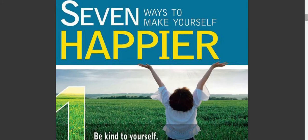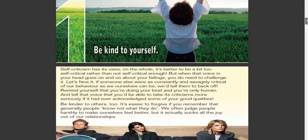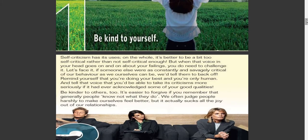Now let's come to the second part of Unit 7, which is reading and speaking. Here we have a very positive passage for you: seven ways to make yourself happier. Let's count them one by one — first let us read these short lines.